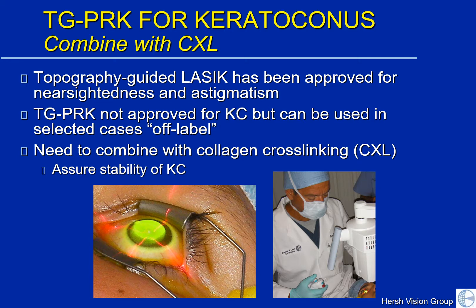Topography-guided LASIK has been approved for the treatment of normal nearsightedness and astigmatism, but it is not approved for keratoconus. And when we do use it for keratoconus, topography-guided PRK needs to be combined with collagen cross-linking. Collagen cross-linking has the goal of making your cornea stronger to diminish progression of keratoconus. So in concert with the topography-guided PRK procedure, we need to do cross-linking to assure that the cornea is stable over time afterwards.